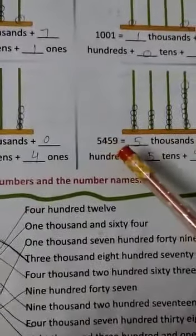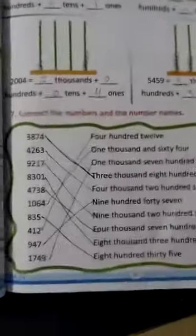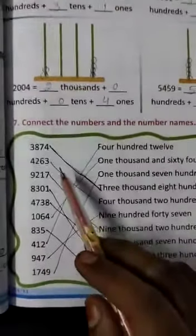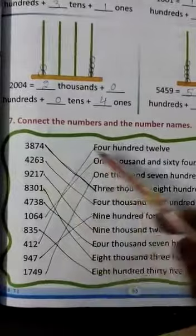Next, 5459: 5, 4, 5, 9. 5253: 5, 2, 5, 3. Now for 3874 and 4263, match them accordingly.